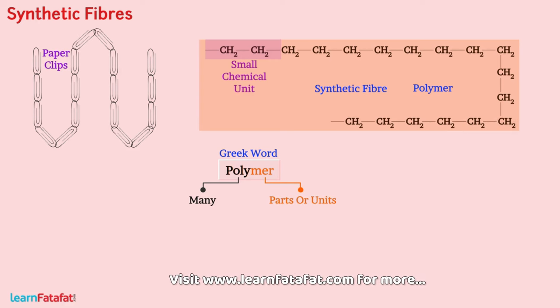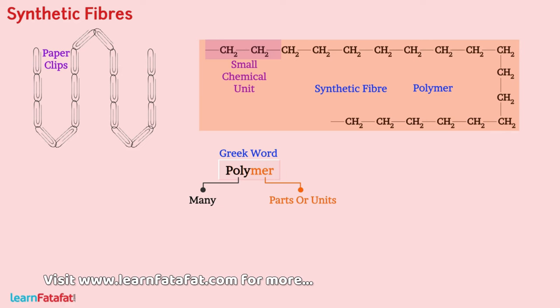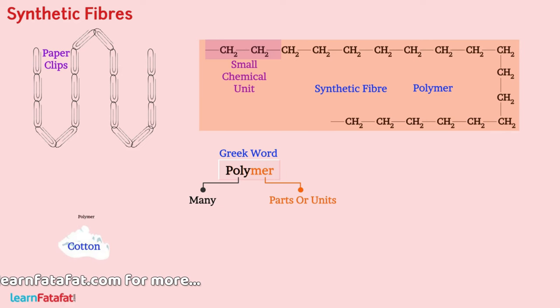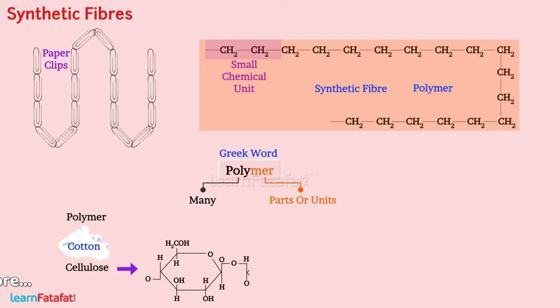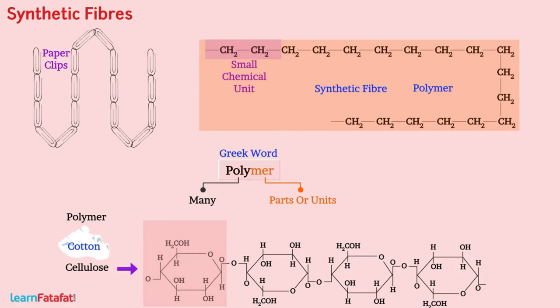Polymers occur in nature also. For example, cotton is a polymer called cellulose, which is made up of a large number of glucose units.